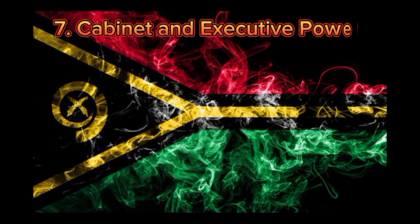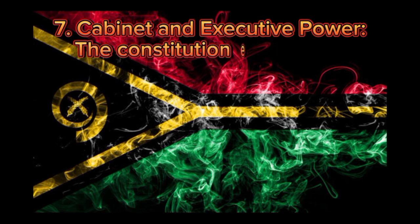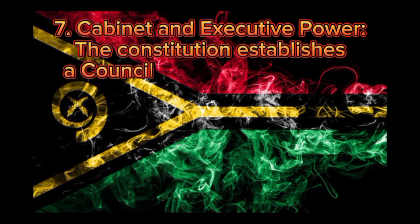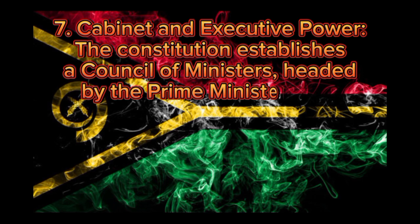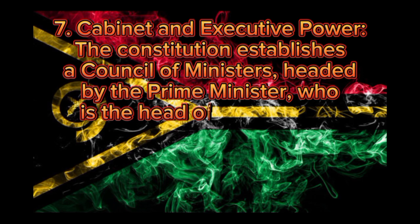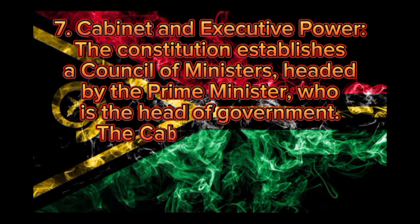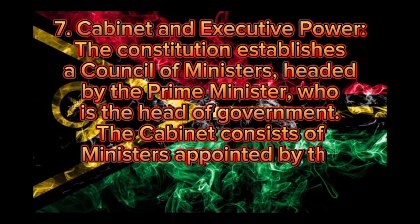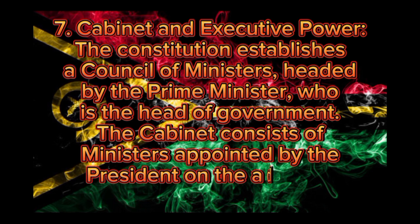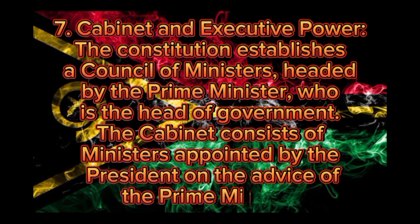7. Cabinet and executive power. The Constitution establishes a council of ministers, headed by the prime minister, who is the head of government. The cabinet consists of ministers appointed by the president on the advice of the prime minister.